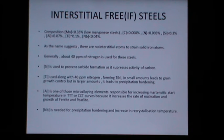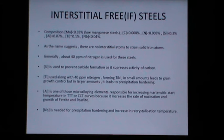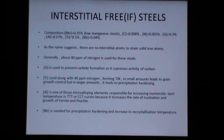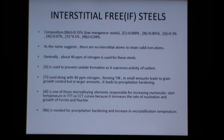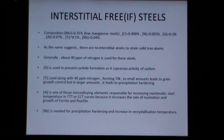The composition of the interstitial free steels — as we all know, they are low manganese steels, containing manganese less than 0.35% (all percentages are in weight percent). The amount of carbon in IF steels is less than 0.008%, nitrogen less than 0.005%, silicon less than 0.3%, aluminum less than 0.07%, titanium approximately 0.1%, and niobium less than 0.04%.